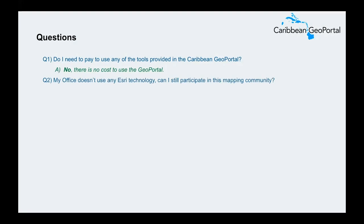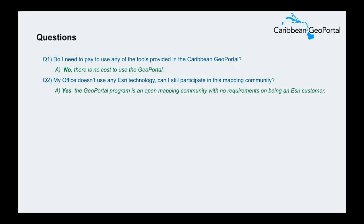Another question: my office doesn't use any Esri technology — can I still participate in this mapping community? Yes, absolutely you can. The GeoPortal is an open mapping community. There is no requirement to be an Esri customer. We support open standards. The data is shared openly with REST endpoints. I run a Mac and I have QGIS on my machine and I'm able to access the data. There is no requirement of being an existing Esri customer — the requirement is just going in and creating that GeoPortal account and participating within the community from there.